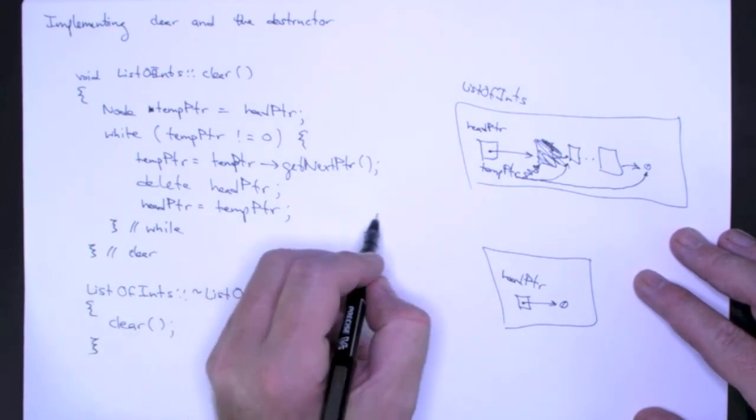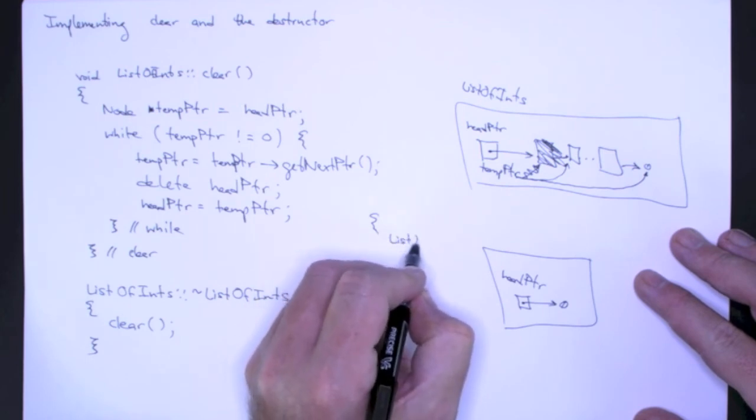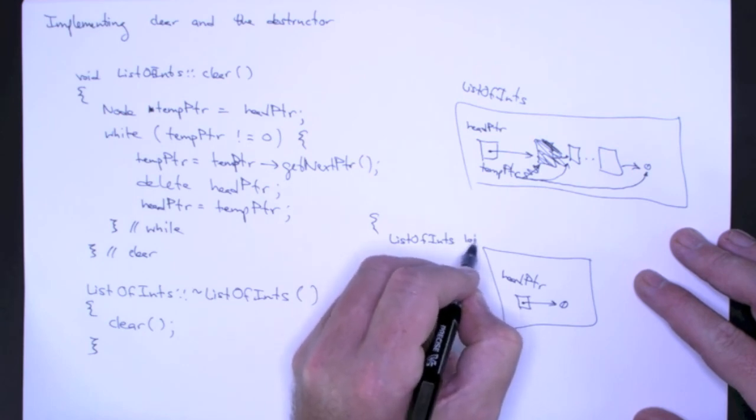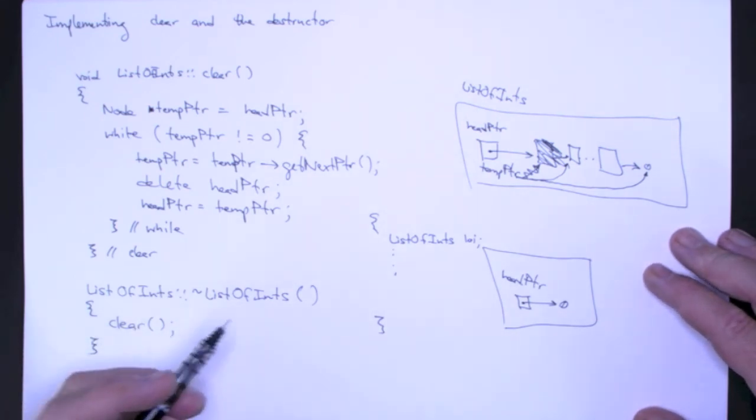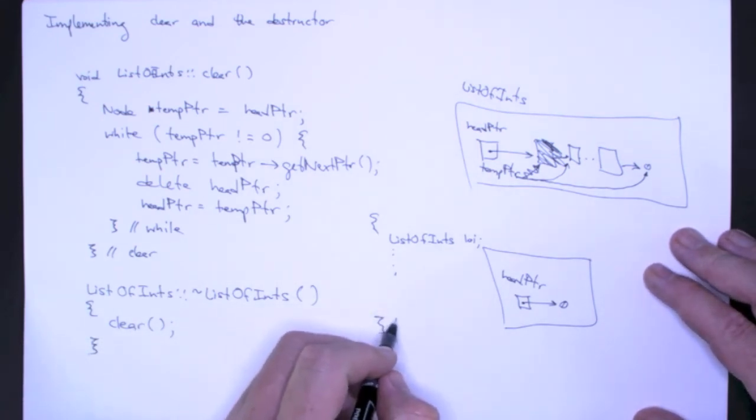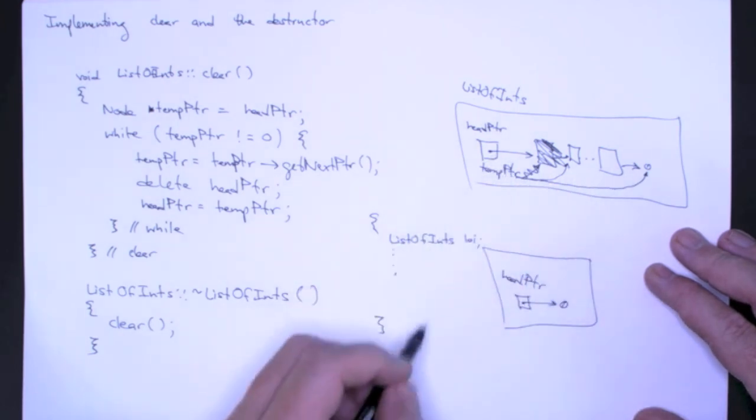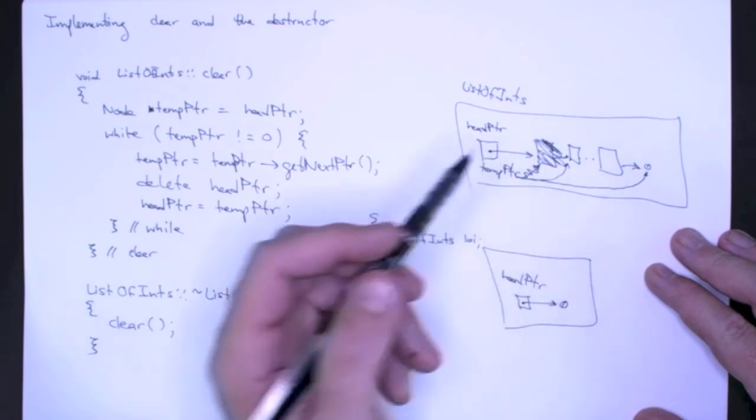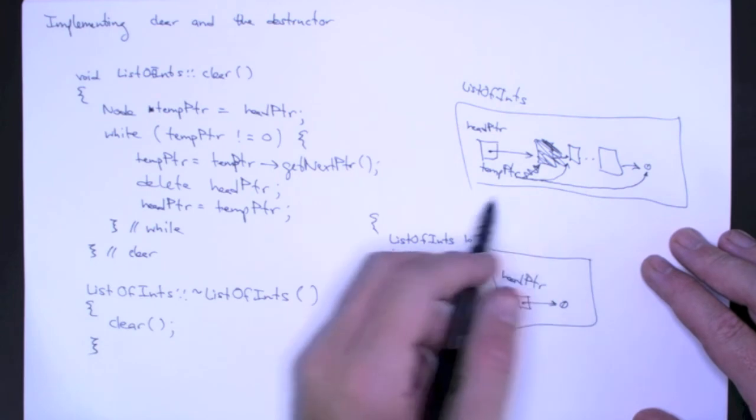So when we leave the scope, if we're in some block and we create some list of ints, and we are building our list, we're using our list, we're printing our list, and when we get to the end of this block, there's no guarantee that by the time we get to the end of this block that no elements are in this list. There could be none. There could be 25 or 10,000 nodes to this list.